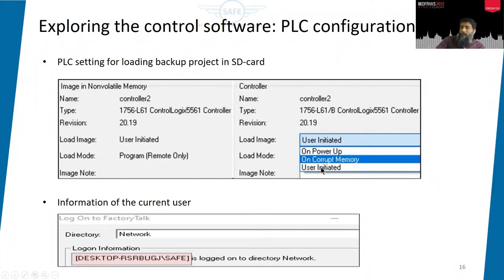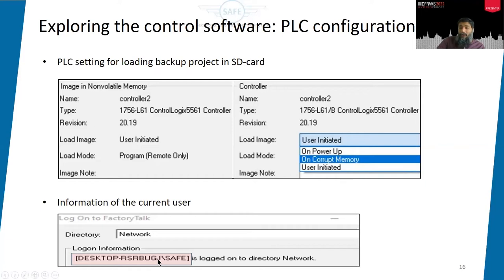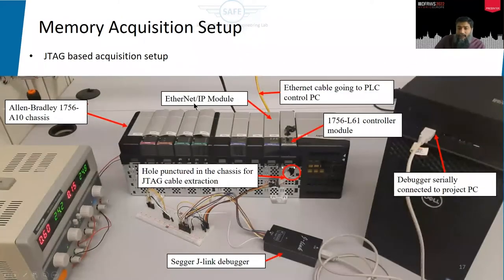The configuration also tells us information about the current user — specifically through Factory Talk, the licensing server — showing which username and machine are logged into a particular PLC. The hardware-based memory acquisition setup we reused from our previous work uses a control PC that pushes a program via Ethernet, and fetches memory through JTAG and a hardware debugger.